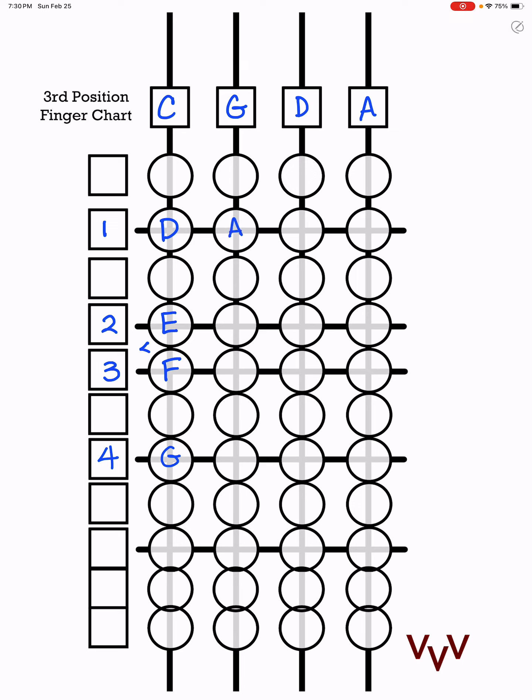A is first finger. B is second finger. And then C is a half step right there.